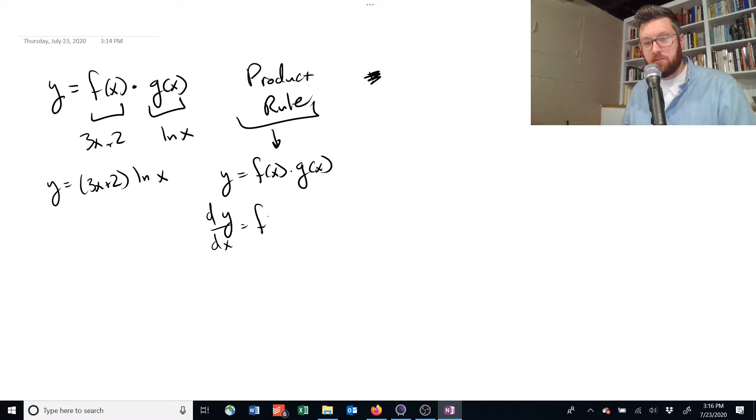is equal to the derivative of the first one times just the second one, leave it alone, plus the reverse. So now we leave the first one alone and multiply by the derivative of the second one.